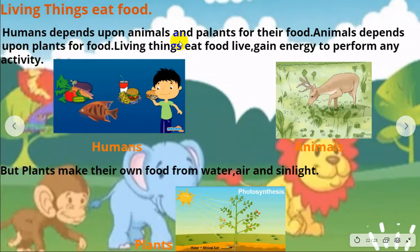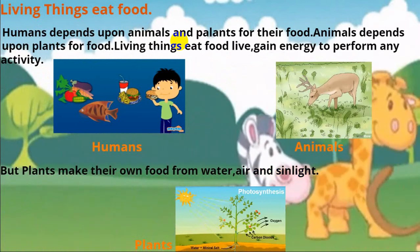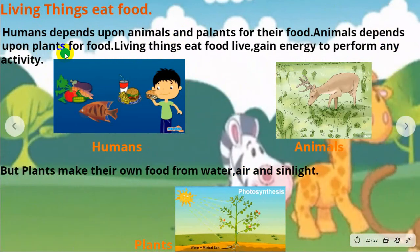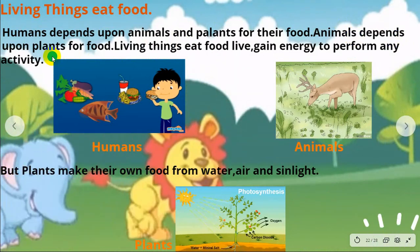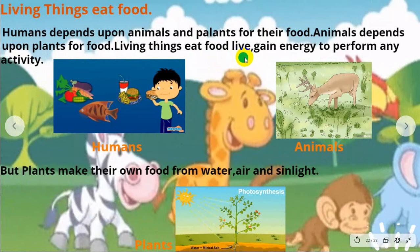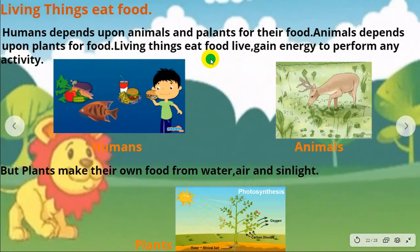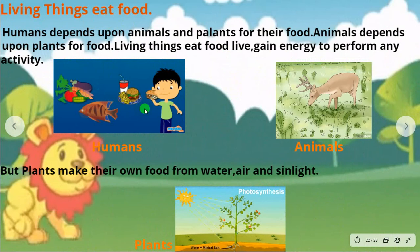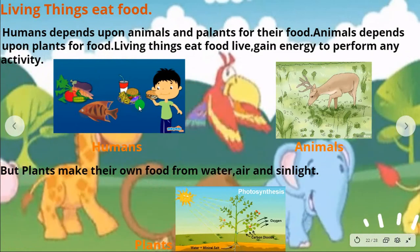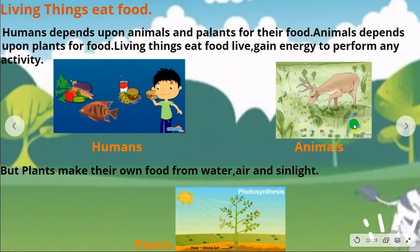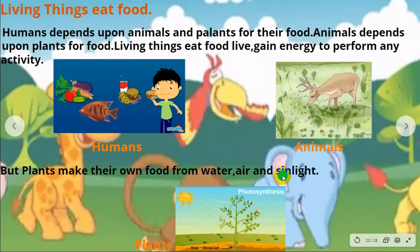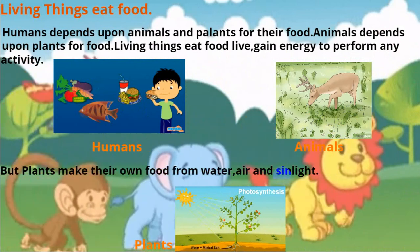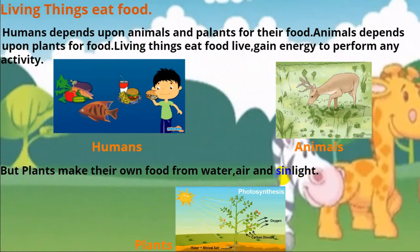Living things eat food. Humans depend upon animals and plants for their food, and animals depend upon plants for food. Living things eat food to live and to gain energy to perform activities. But plants make their own food from water, air and sunlight.